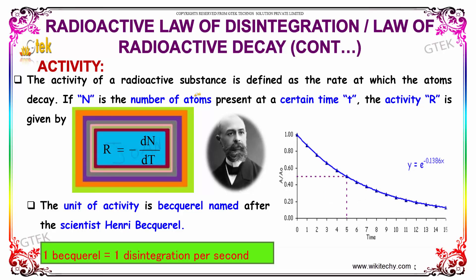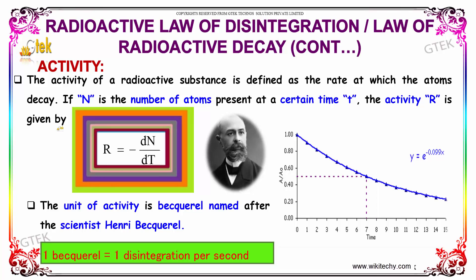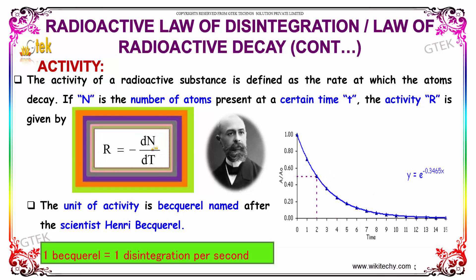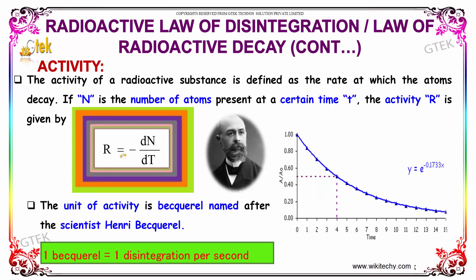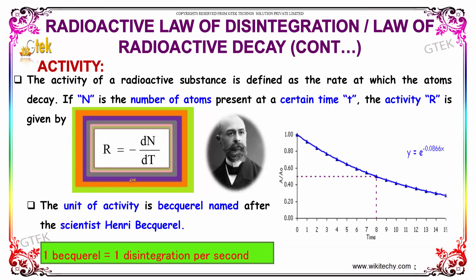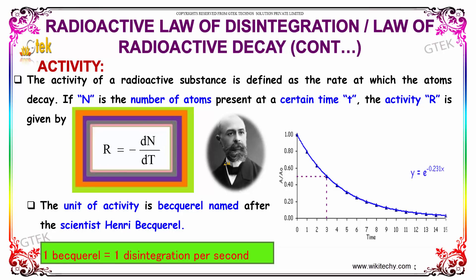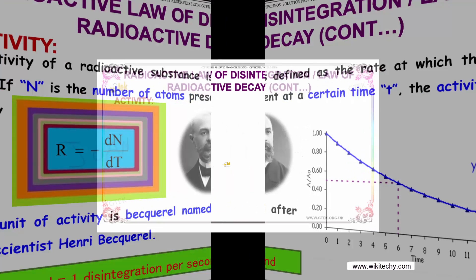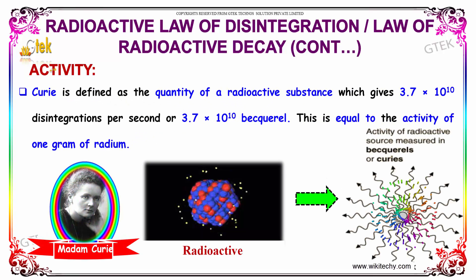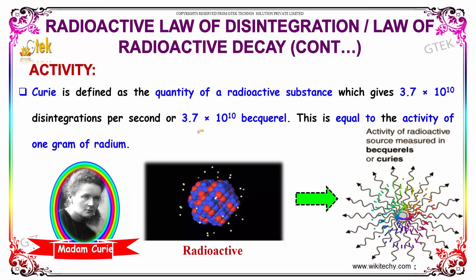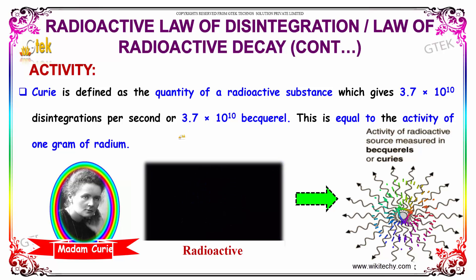The activity of a radioactive substance is defined as the rate at which the atoms decay, referred to as radioactivity. If N is the number of atoms present at time t, the activity R is given by R = -dN/dt. The unit of activity is the becquerel, named after scientist Henri Becquerel. One becquerel equals one disintegration per second. The curie is defined as the quantity of radioactive substance giving 3.7×10¹⁰ disintegrations per second, which equals 3.7×10¹⁰ becquerel — equal to the activity of one gram of radium.